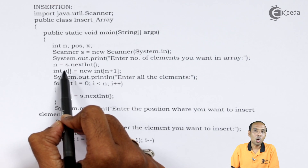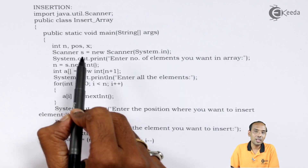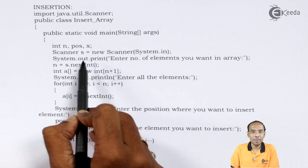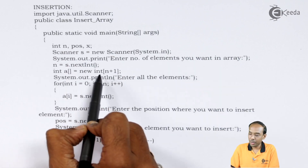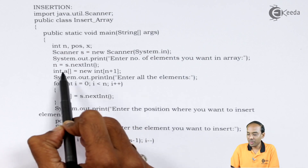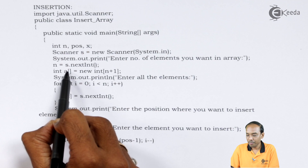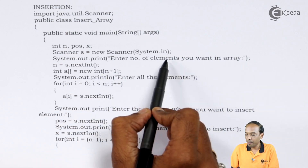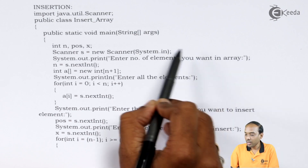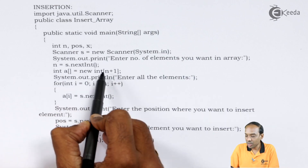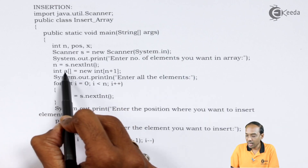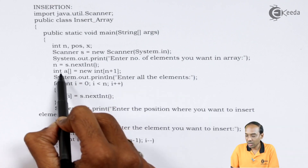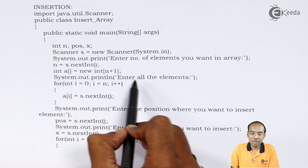Next I have defined an array called a. The size of this array is n plus 1, because array index starts from 0. So the statement is: int a[] = new int[n + 1]. For example, if the user wants 3 elements, then n is 3, and the size of a becomes 3 plus 1 which is 4.